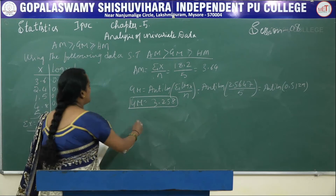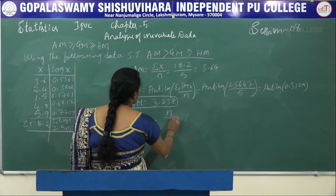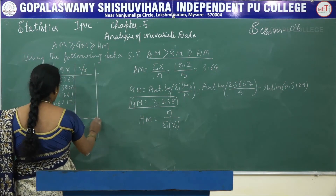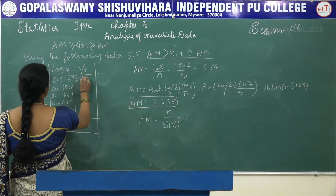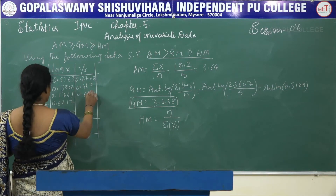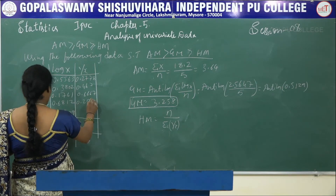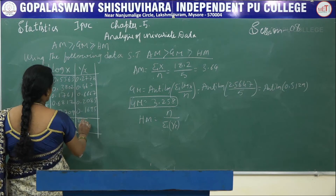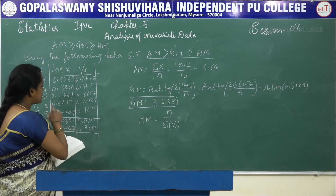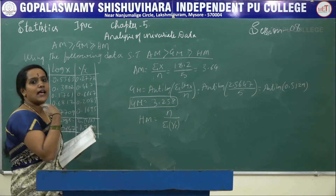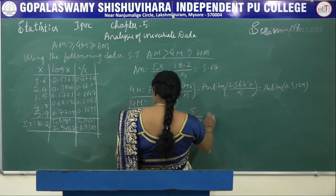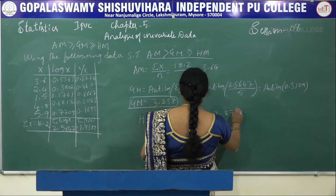Next, we find HM. HM is equal to N divided by summation of 1/X. The 1/X values are 0.2778, 0.4167, 0.6667, 0.2083, and 0.1695. Summation of 1/X is 1.7389. So HM is 5 divided by 1.7389, which equals 2.8754.